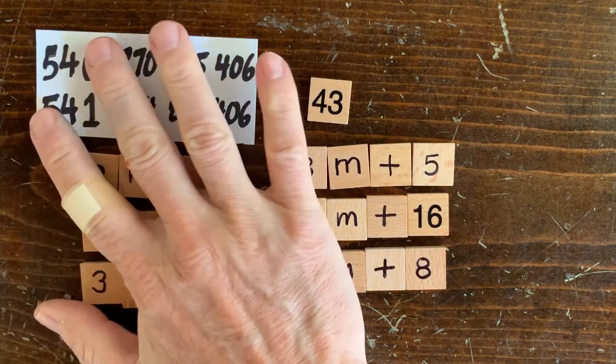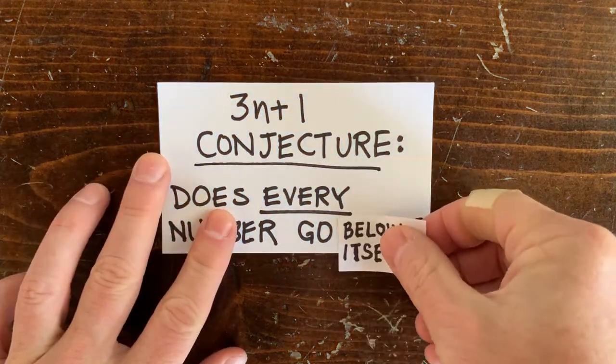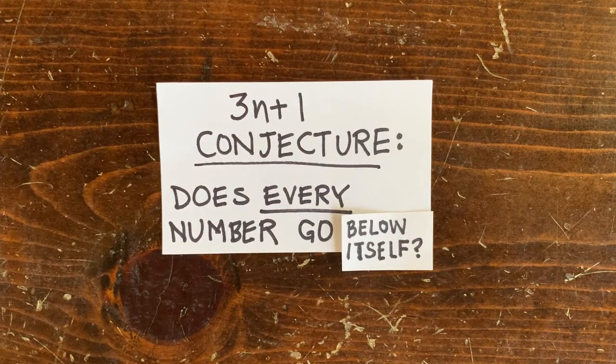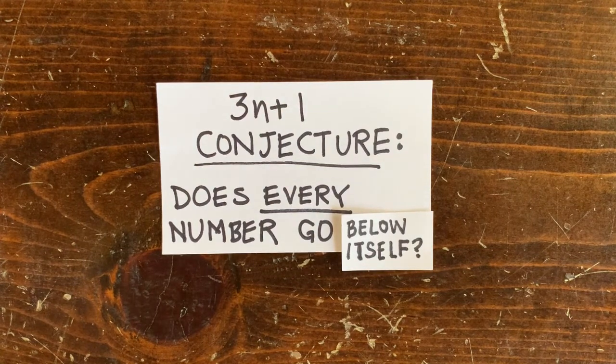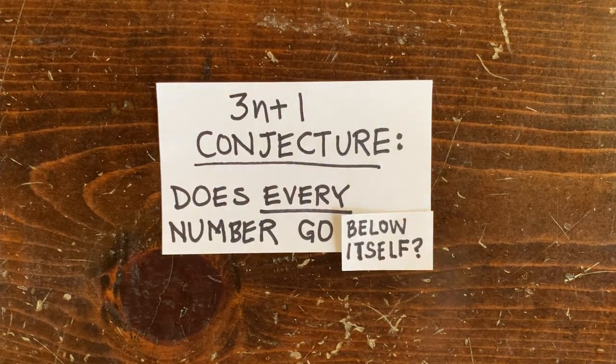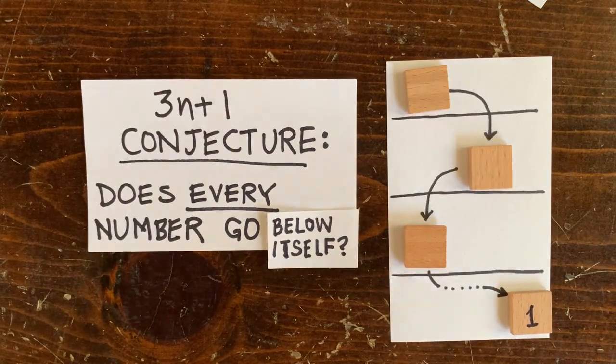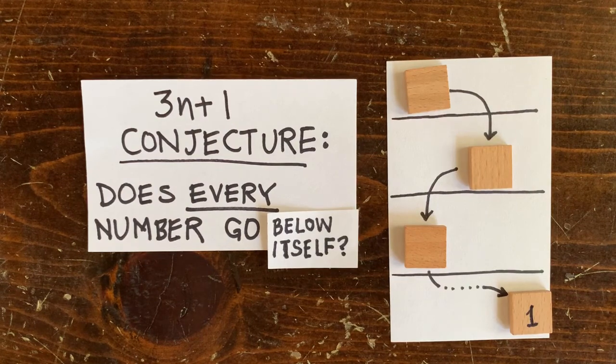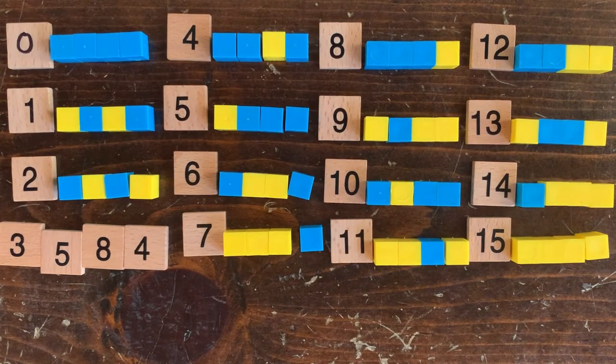Then we looked at a simpler version of the 3n plus 1 conjecture. Instead of asking, does every number go to 1, we asked, does every number go below itself? If any number goes below itself, then whatever number it lands on will go below itself and so on, and we'll have shown the 3n plus 1 conjecture is true. Now we know that all even numbers go below themselves right away, and odd numbers of the form 4n plus 1 also go below themselves quickly. But it turned out we could do much better than that.